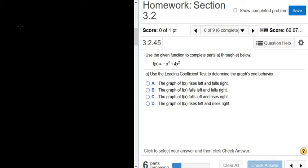Use the given function to complete parts a through e below. So the function they give us is f of x equals negative x to the fourth plus 4x squared.